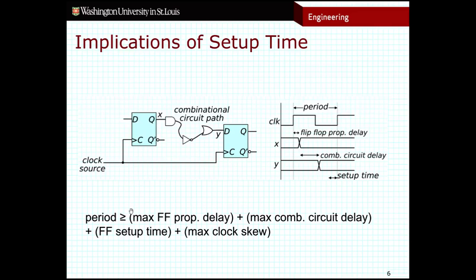Clock skew refers to the idea that the clock arrives at different flip-flops at slightly different times. A flip-flop physically closer to the clock source will receive the clock signal a little bit earlier than one farther away. It might not be by very much, but the difference exists. So to summarize: we need to find the critical path, account for flip-flop propagation delay, critical path delay, setup time, and clock skew — and we can use all of that to determine our clock period.